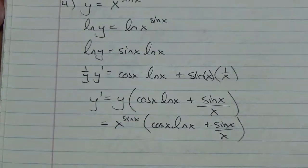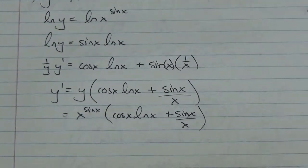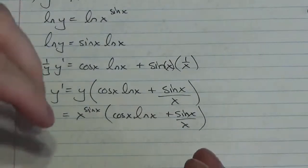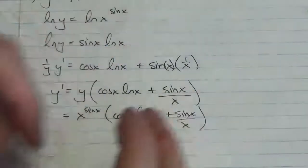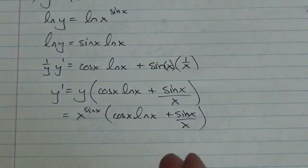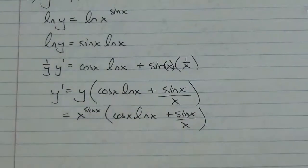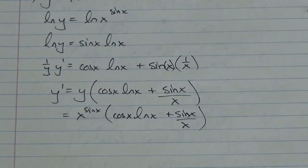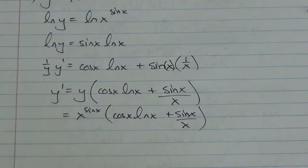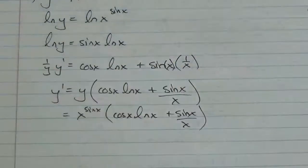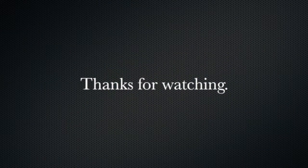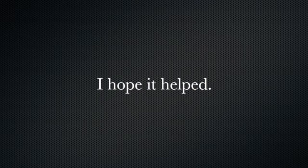I hope that idea of logarithmic differentiation makes sense. It is necessary when you've got a function with a variable in the base and a variable in the exponent — you can use logarithms to split those up. It didn't even have to be the natural log, by the way; I could have used any log base. It's just that the natural logarithm — as we've seen over the last few lessons — is really convenient because its derivative is so straightforward. See you next time.